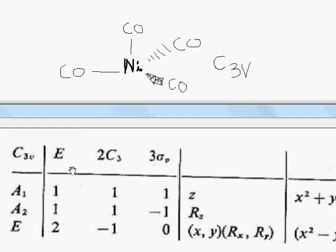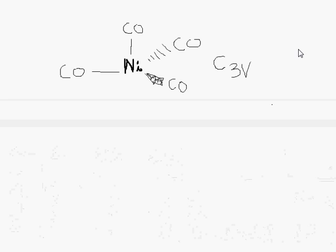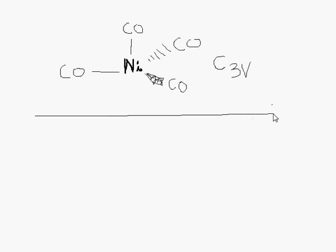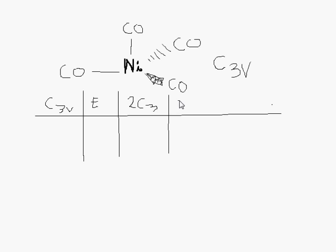If you look at the C3V table, it's pretty simple. You've only got three operations: the identity operation, the C3 axis operation, and your reflection plane. What you want to do first is write out a table like the one you have, and start with the operations. The first thing you want to find is a number called H, which is the total number of symmetry operations. All you do is sum the coefficients of each operation — in this case it's 1 plus 2 plus 3, so H equals 6.